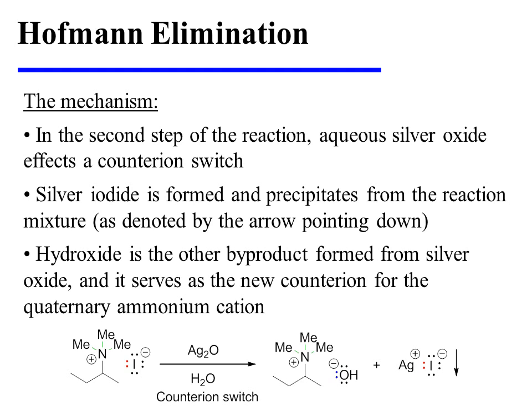In the second step of the reaction, aqueous silver oxide affects a counter-ion switch. Silver iodide is formed and precipitates from the reaction mixture, as denoted by the arrow pointing down. Hydroxide is the other byproduct formed from silver oxide, and it serves as the new counter-ion for the quaternary ammonium cation.